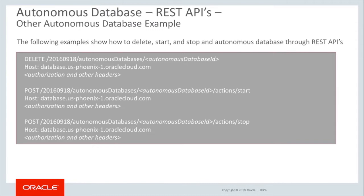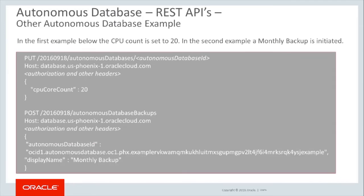In these examples, we see the basic API call for deleting an existing Autonomous Database, as well as starting and stopping an existing Autonomous Database. The result will be similar to what we saw in the previous slide. In this REST API call, the database is being scaled to a total of 20 CPUs allocated. In the second example, a backup is initiated on the database.